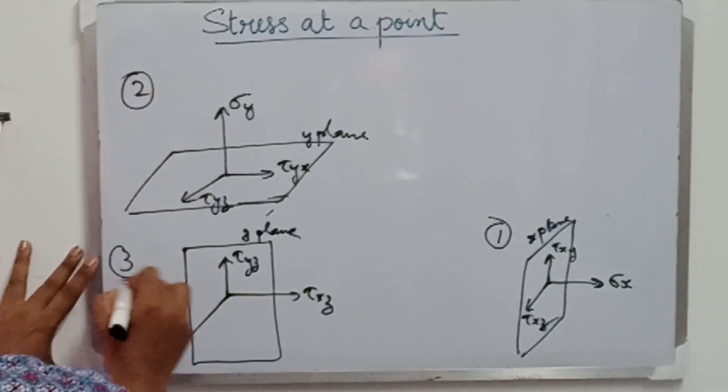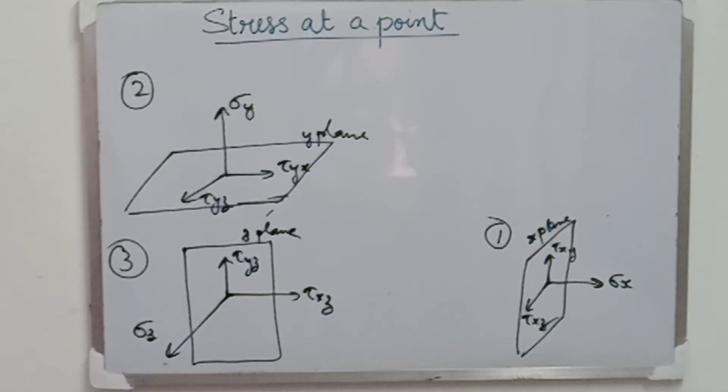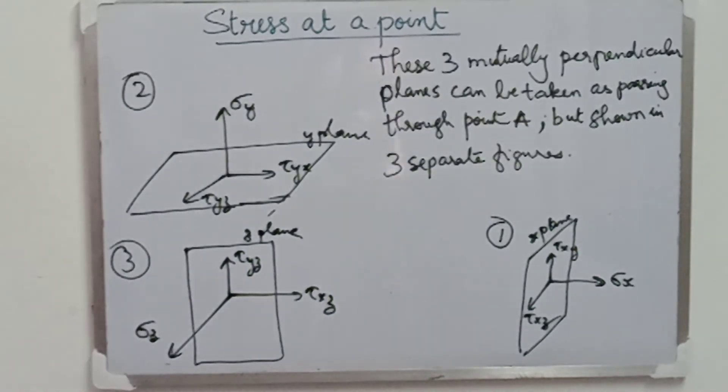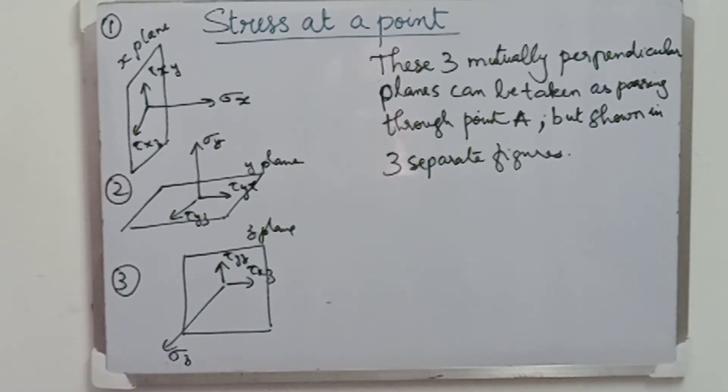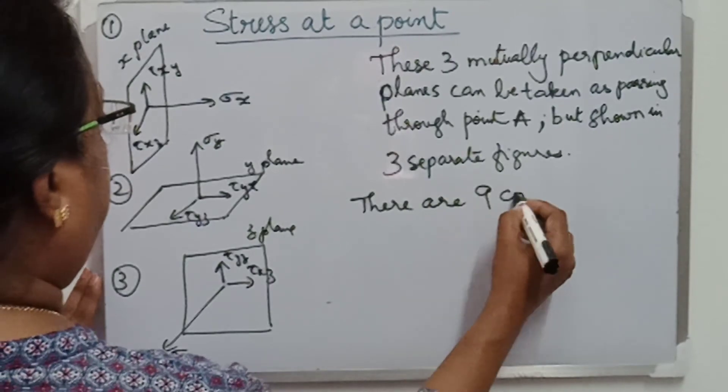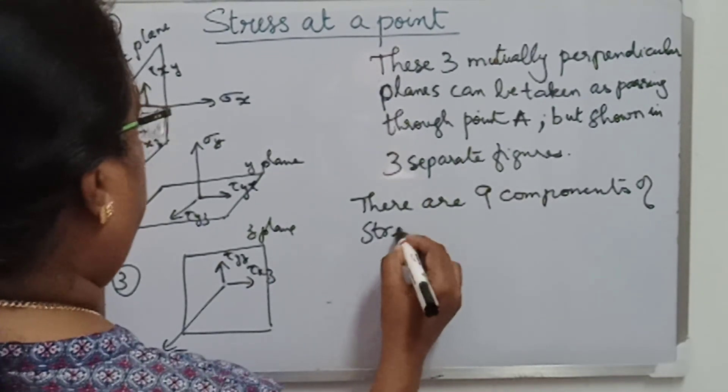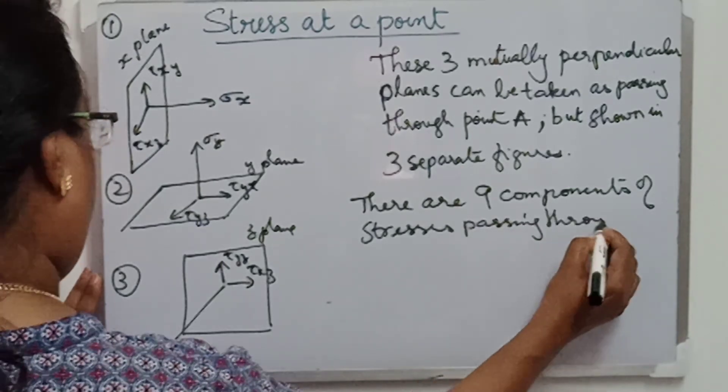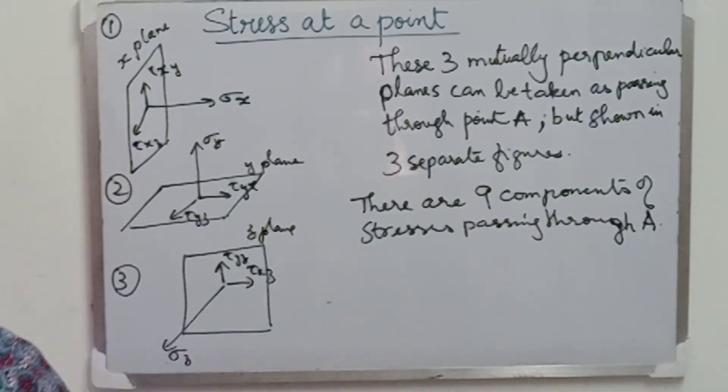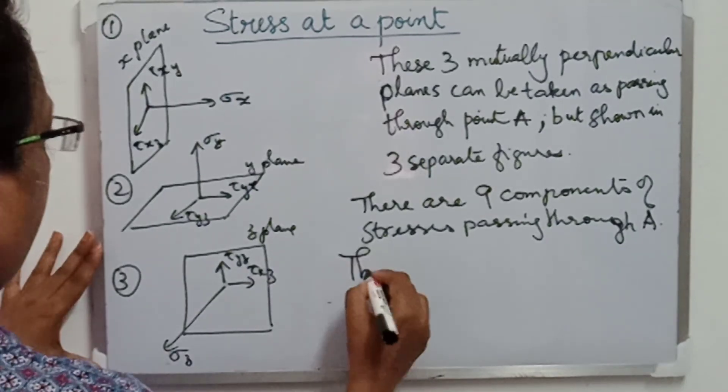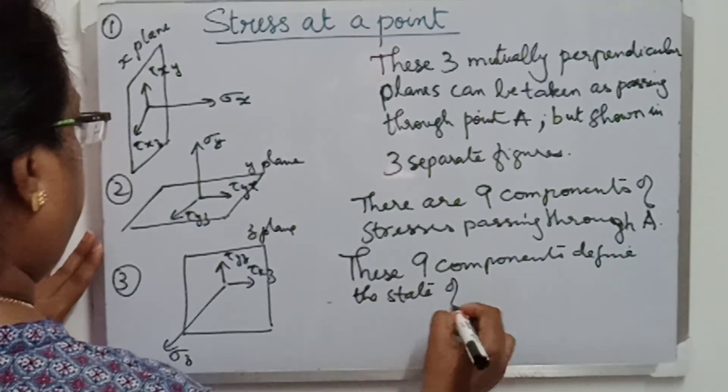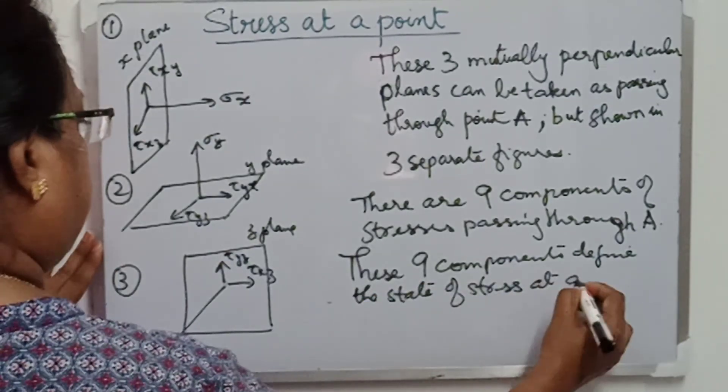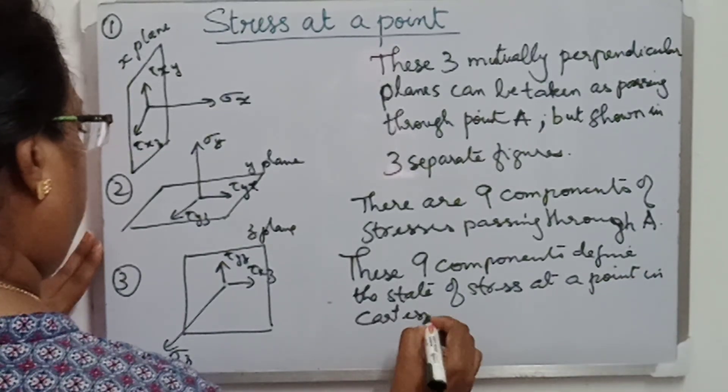Actually, we should write it as tau zx and tau zy in the third case. So, here we have three mutually perpendicular planes and these planes can be considered as passing through point A and here we are shown that in three separate figures. So, there are nine components of stresses passing through the point A. These nine components define the state of stress at any point A in the Cartesian coordinate system.